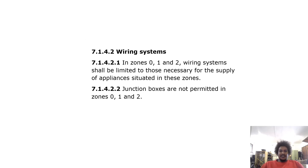Wiring systems in zones 0, 1 and 2: wiring systems shall be limited to those necessary for the supply of appliances situated in these zones. Junction boxes and trunking boxes are not permitted in zones 0, 1 and 2.